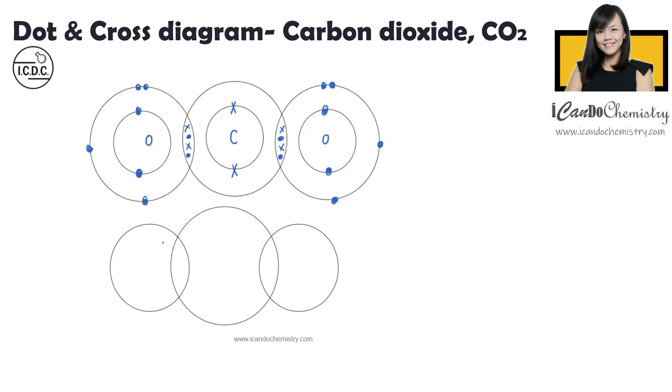In exams, if they ask you for only the outermost electrons, what you will need to show is this. We omit the electrons at the inner shells. This is what you need to show if you're asked to draw only the outermost electrons.